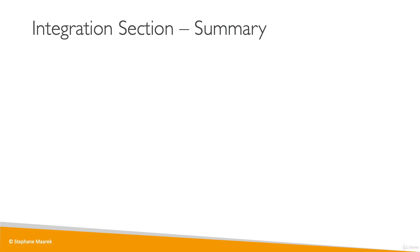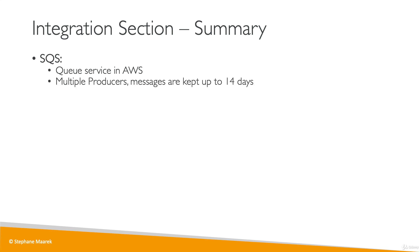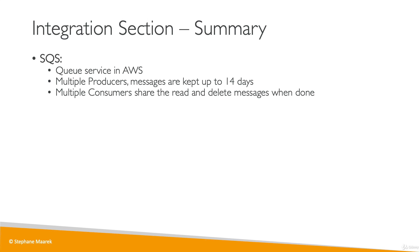Let's summarize everything we've learned in this section. SQS is a queuing service in AWS, and we can have multiple producers into an SQS queue. Messages are going to be kept up to 14 days in the queue, then deleted. Consumers can read these messages and they will split the reads. Once a message is read and processed, it's going to be deleted. It's used to decouple applications within AWS — anytime you see queuing and decoupling, think SQS.